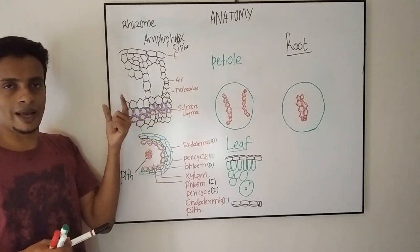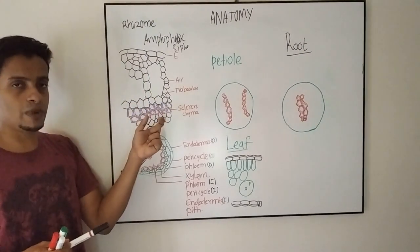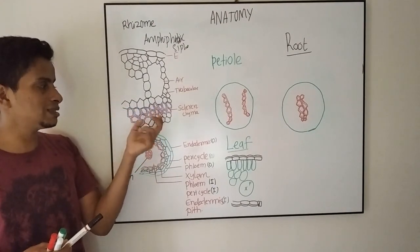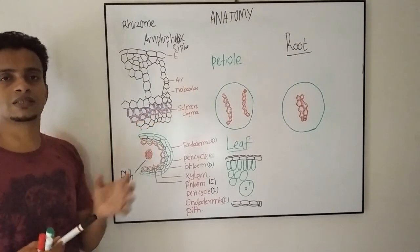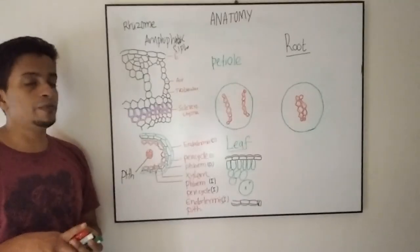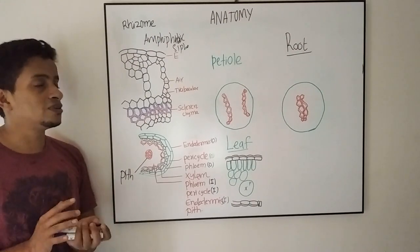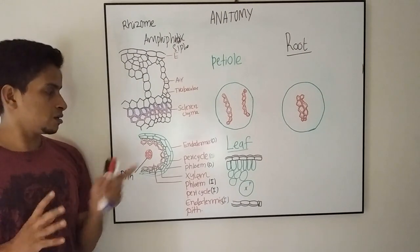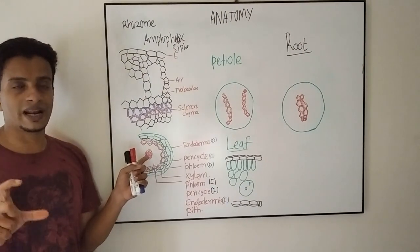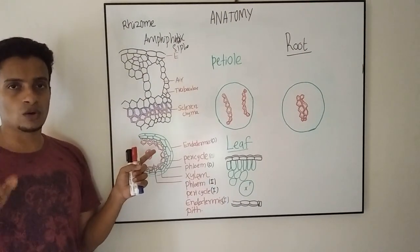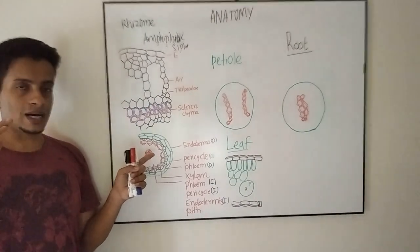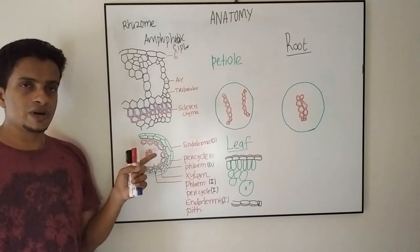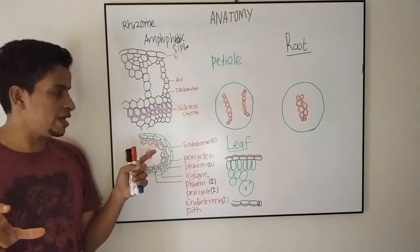Just below this outer parenchymatous cortex is the middle sclerenchymatous cortex, which is a few-layered cortex, then inner parenchyma. The stele region is very peculiar in the rhizome of Marsilea. It is amphifloic siphonostele, having a central sclerenchymatous pith with one single strand of xylem siphon, which is encircled on both outer and inner sides by phloem.